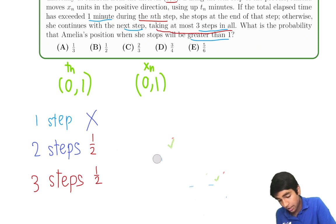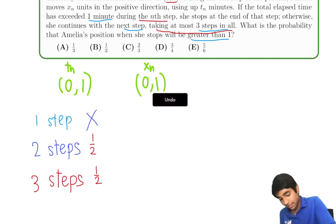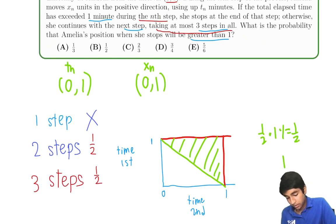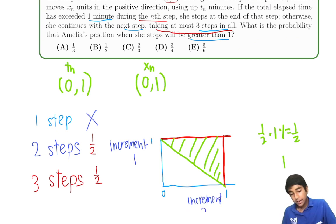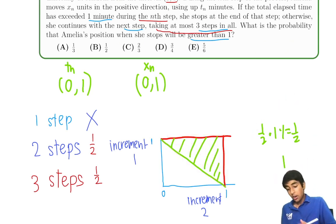So now what's the probability that Amelia's position will be more than 1 after two steps? Well, each increment is randomly from 0 to 1. It's the exact same geometric drawing as you can see here, because there's two increments now. Increment 1 and increment 2 from each of the two steps, right? And just like earlier, the total increments will be more than 1 if it lies in this triangular region over here. So half of the total area as we found. So in this half, earlier we found half chance the time will be more than 1. Now, half chance the position will be more than 1.